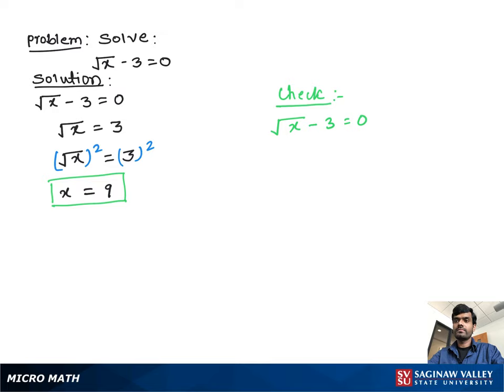Substituting the x value as 9, we can write square root 9 minus 3 equal to 0. We know square root 9 is 3, minus 3 equal to 0. We get 0 equal to 0. It means x equal to 9 is the solution for this problem.